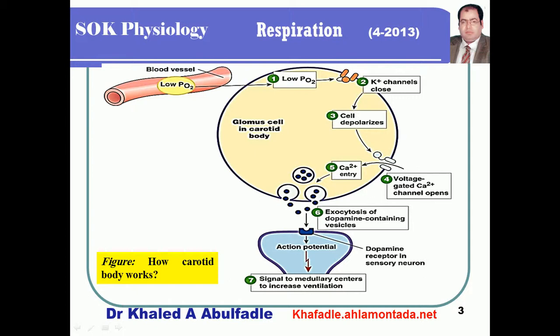Closure of the oxygen-sensitive potassium channel leads to accumulation of potassium inside the glomus cells in the carotid body, which results in depolarization. Depolarization in turn causes opening of voltage-gated calcium channels, increasing calcium influx, which causes release of certain chemical transmitters — catecholamines in nature — which is mainly dopamine.